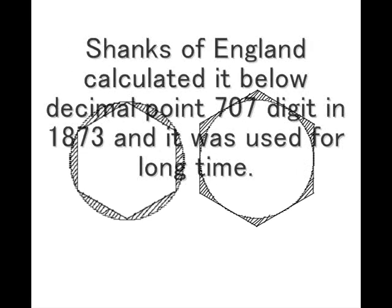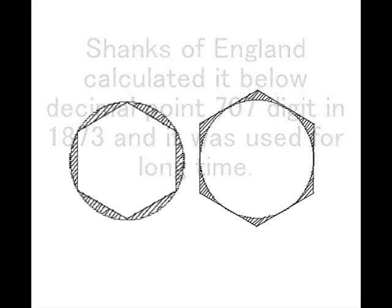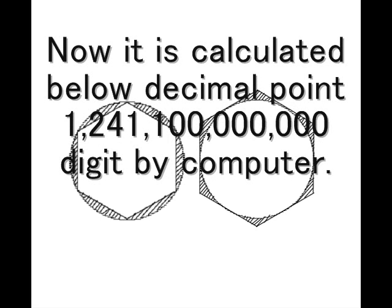Shanks of England calculated pi to 707 decimal places in 1873, and it was used for a long time. Now, it is calculated to 1 trillion 241 billion 100 million decimal digits by computer.